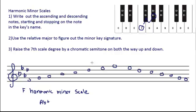In order to change it to our harmonic minor scale, you have to raise the seventh scale degree by a chromatic semitone on the way up and on the way down, using accidentals. So making that E-flat from the key signature into E-natural on the way up and on the way down changes this natural minor scale to a harmonic minor scale. So here you have your F harmonic minor scale.